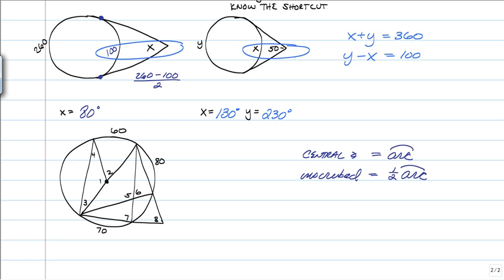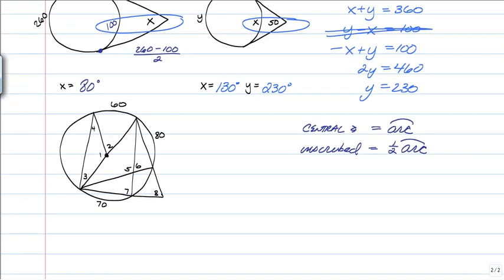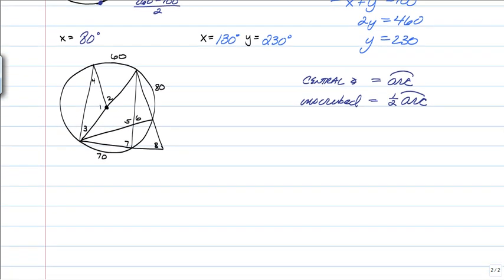And then you could have just solved this like a system. So you would rearrange that to negative x plus y is equal to 100. And then your x's would cancel to y is equal to 460. So y is equal to 230. And then you would subtract that from 360 and find out that x is 130. So it really didn't matter which way you did this.